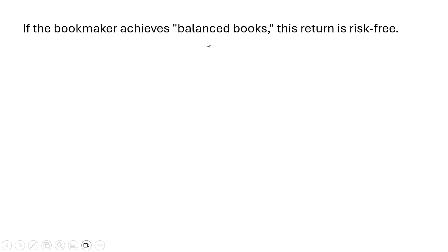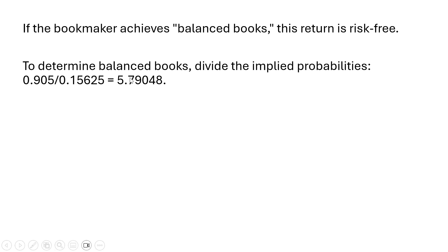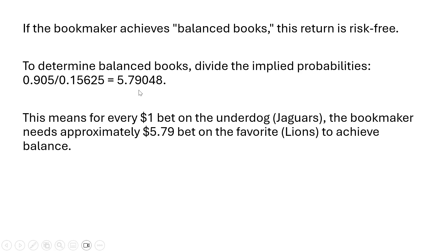If the bookmaker achieves balanced books, this return is risk-free. To determine balanced books, divide the implied probabilities: the probability of the Lions winning divided by the probability that the Jacksonville Jaguars wins, and we get 5.79. This means for every dollar bet on the underdog, the Jaguars, the bookmaker needs approximately $5.79 bet on the favorite team, in this case the Lions, to achieve balance.